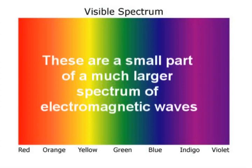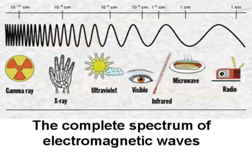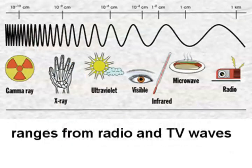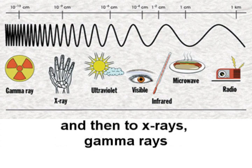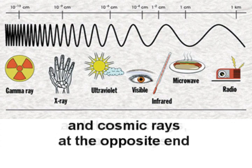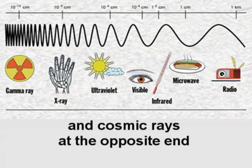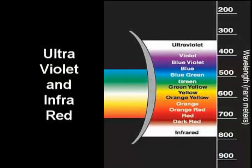These are a small part of a much larger spectrum of electromagnetic waves. The complete spectrum of electromagnetic waves ranges from radio and TV waves through infrared to light, ultraviolet, and then to x-rays, gamma rays, and cosmic rays at the opposite end.